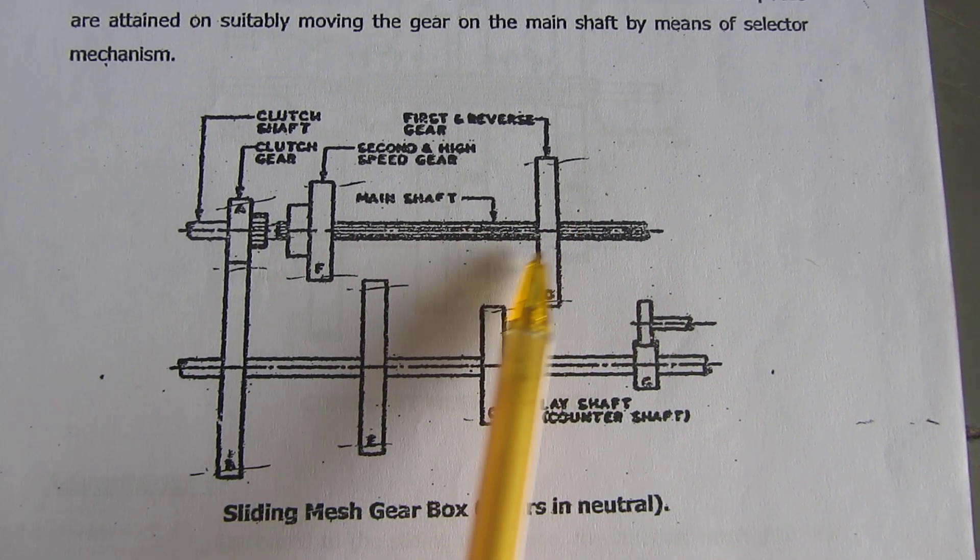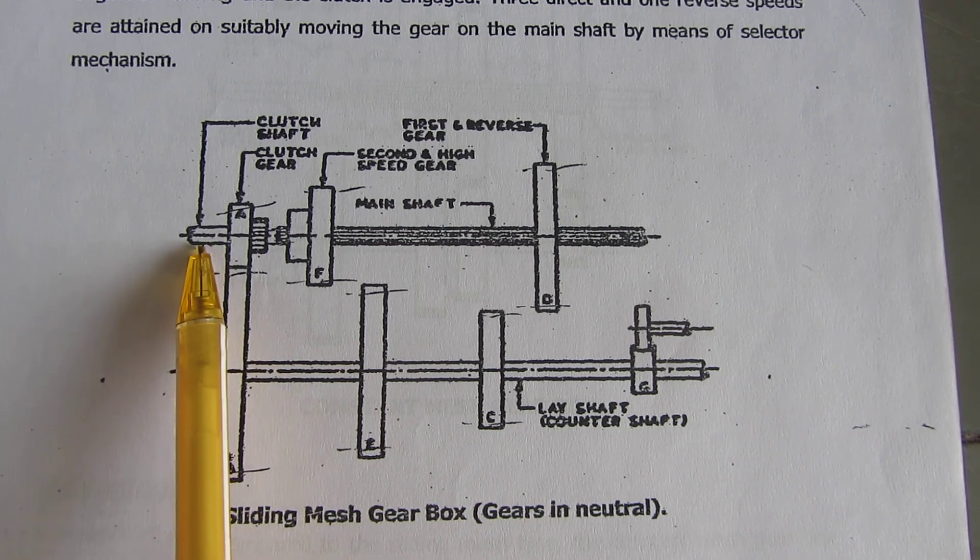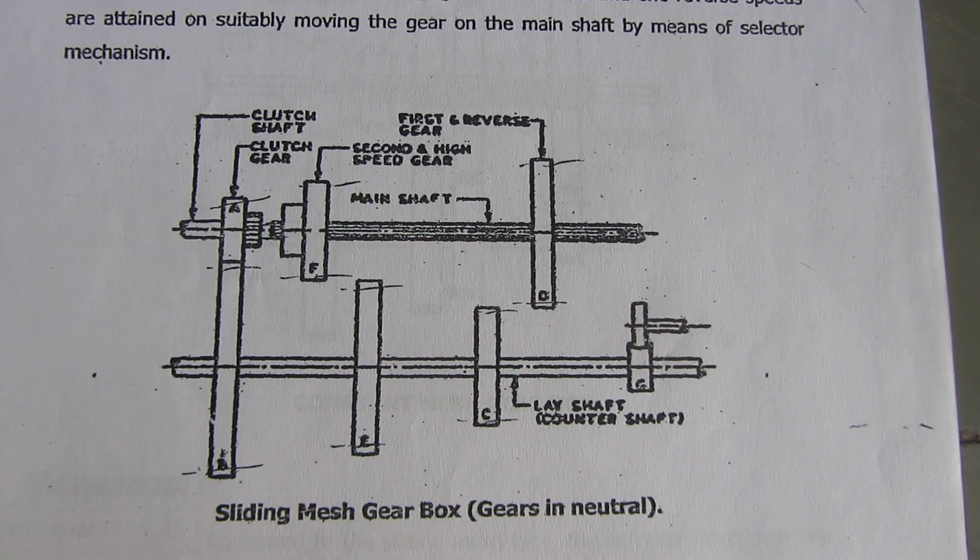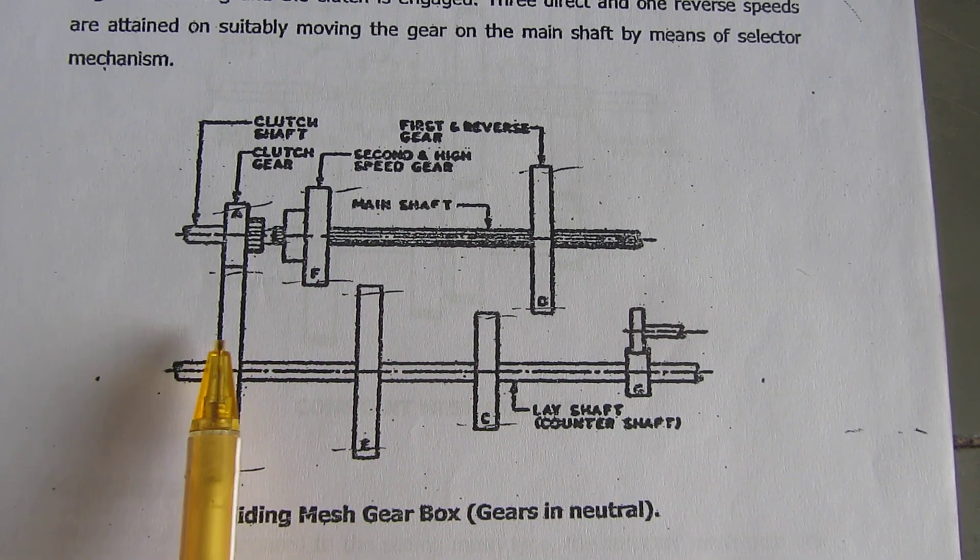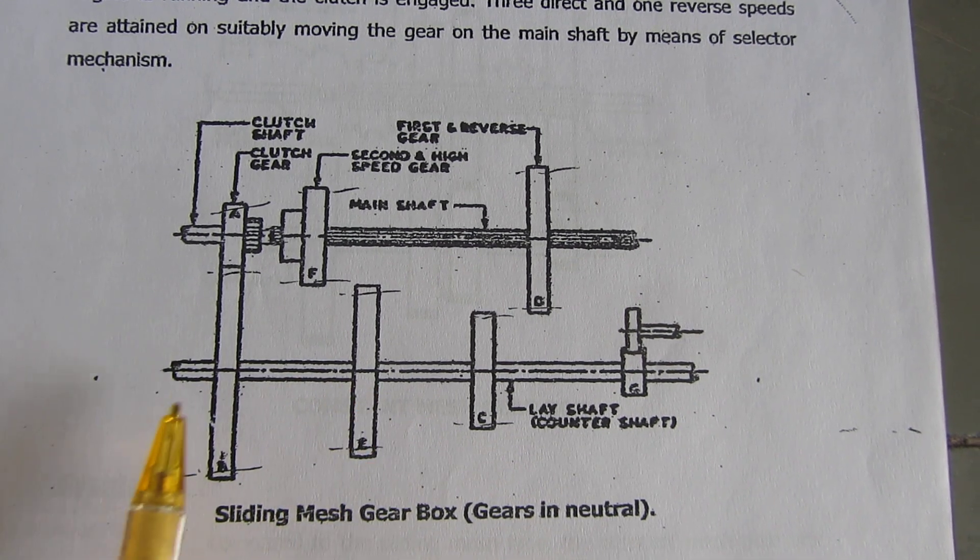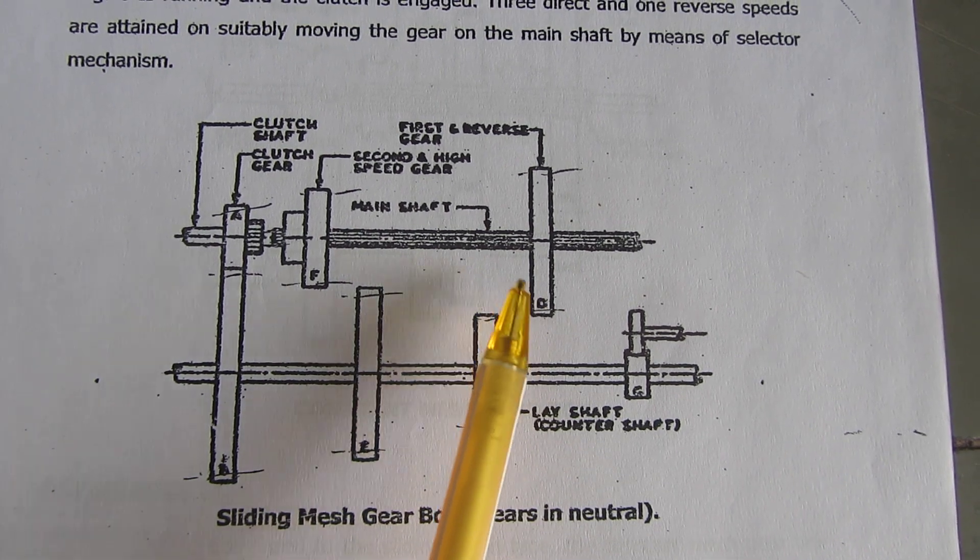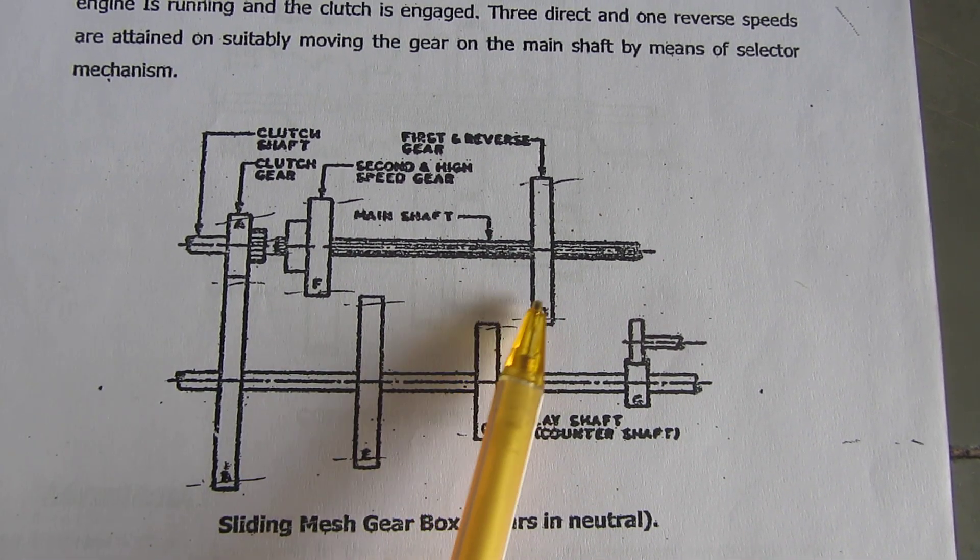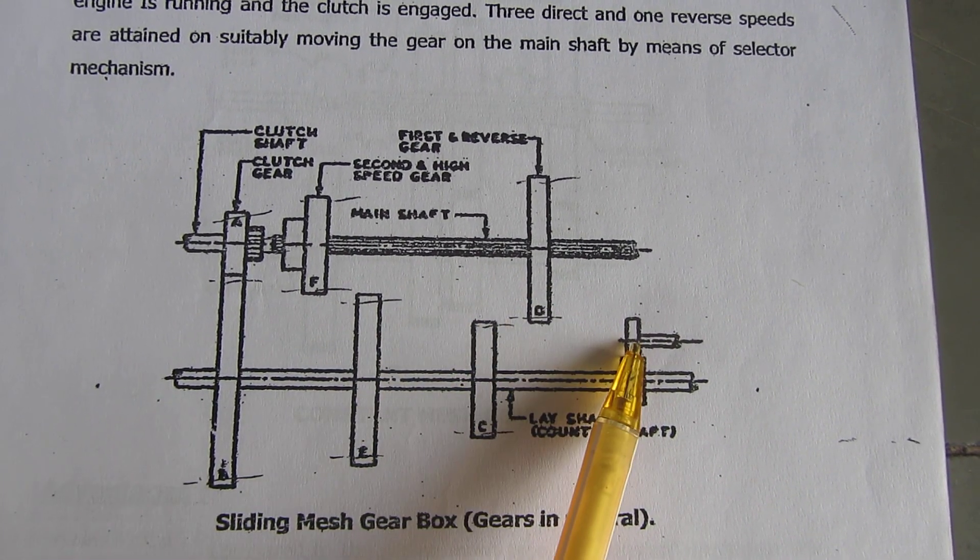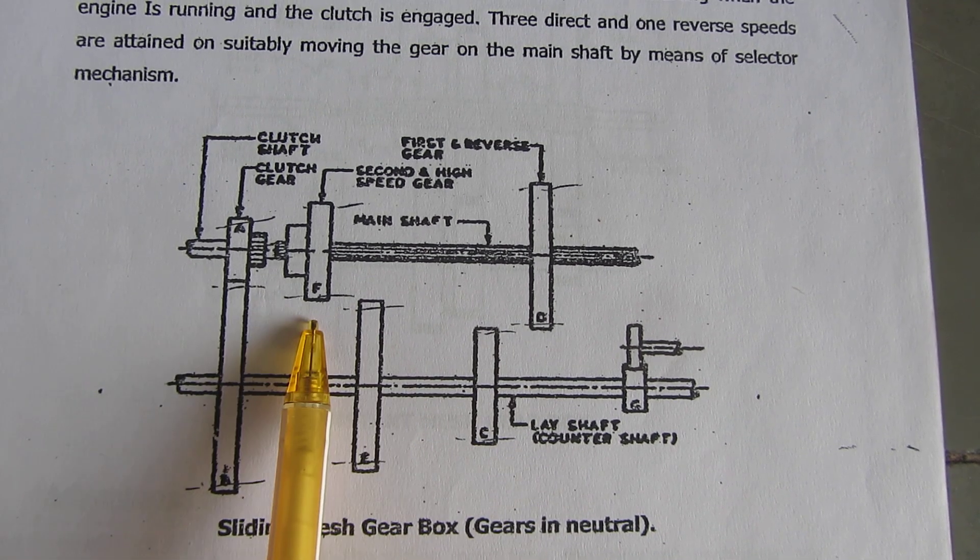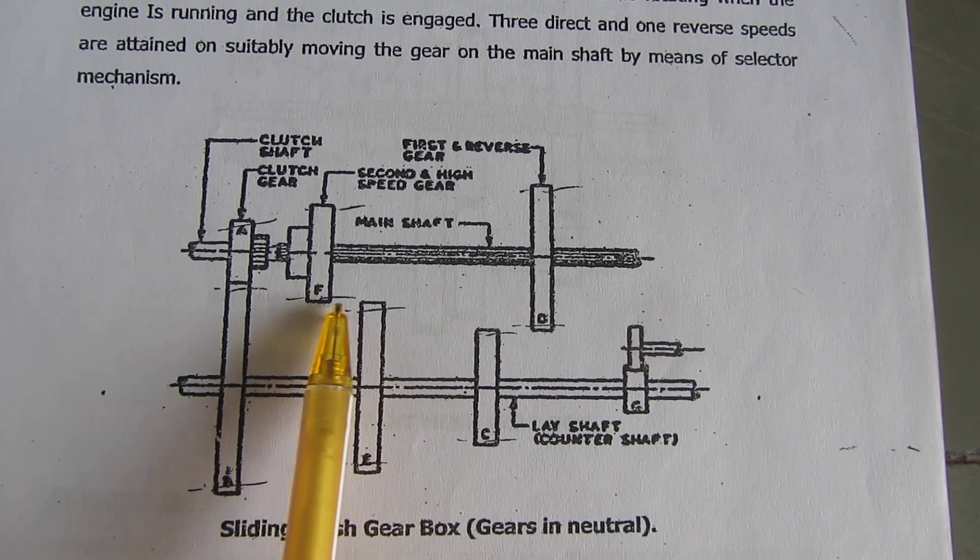If you want first gear, the first gear has high torque and low speed. So a low number of teeth gear has to revolve a high number of teeth gear. Here we can get first and reverse motion. For high speed, this gear is used.